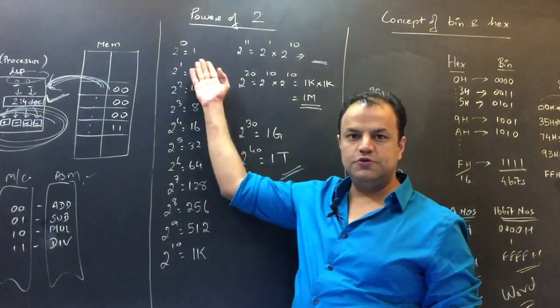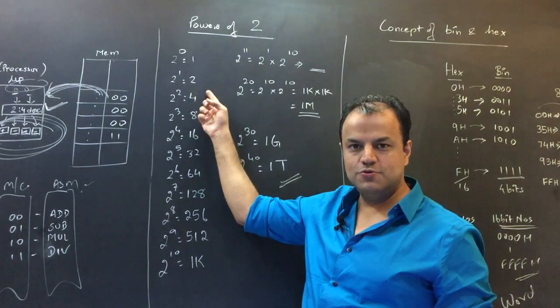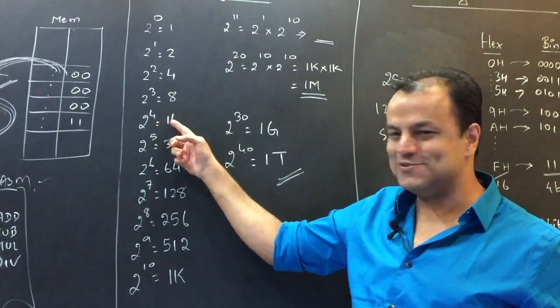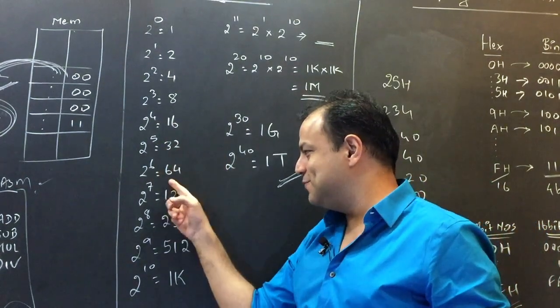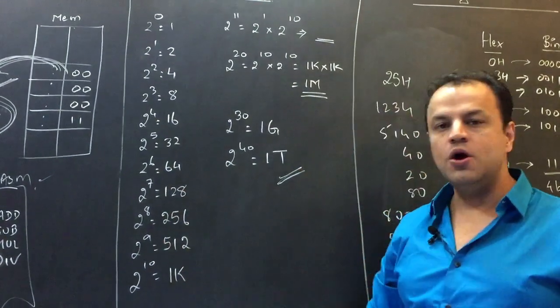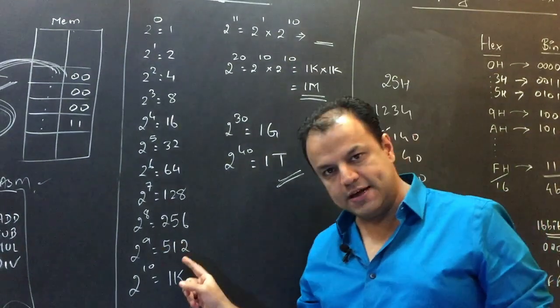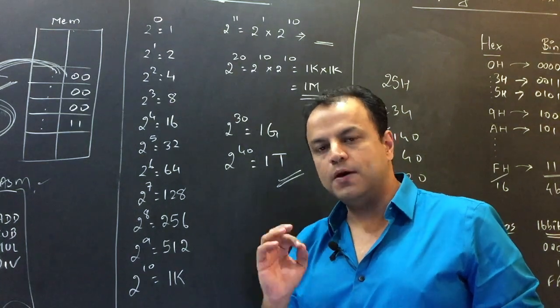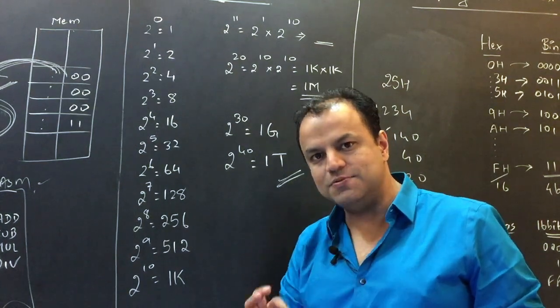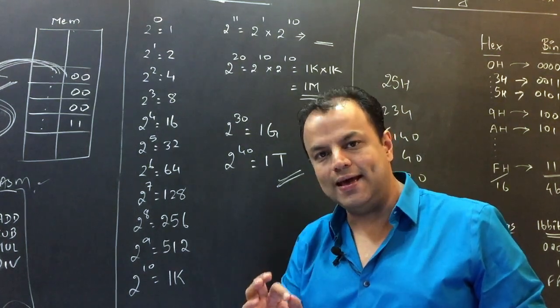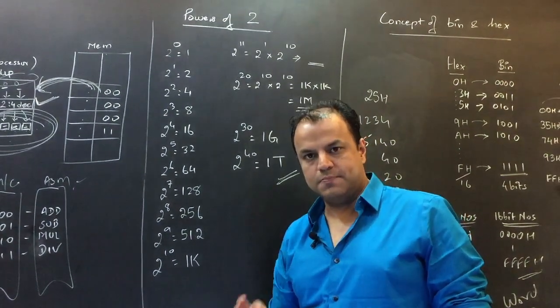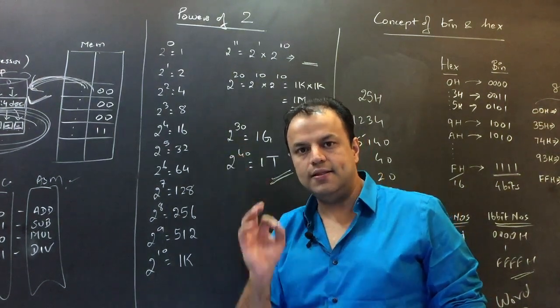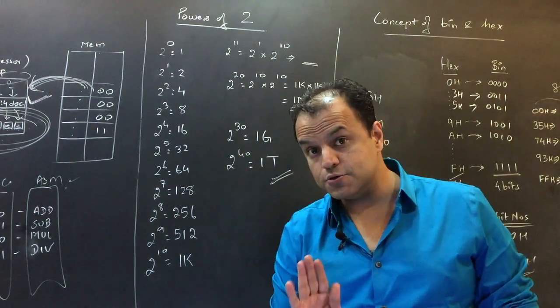Let's look at the basic powers. Two raised to zero is one. Two raised to one is two. Two raised to two is four. Just keep multiplying by two. Two raised to three is eight. Two raised to four is 16, 32, 64. Two raised to seven is 128, 256, 512. Two raised to 10, obviously, is 1024. 1024 in our subject is called 1K, a kilo. A kilo in microprocessors or in computers is not exactly a thousand. It is two to the power 10, that is 1024.